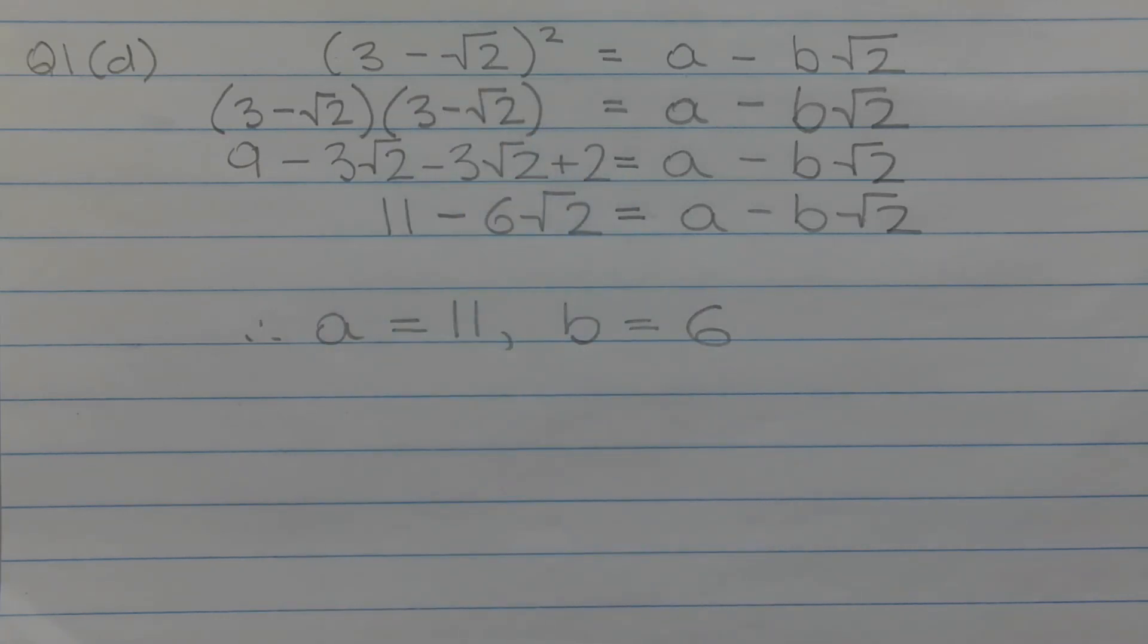Applying the extended distributive law to expand the brackets here, we have 3 times 3, which gives us 9, 3 times negative root 2, which gives us negative 3 root 2, negative root 2 times 3 gives us negative 3 root 2.